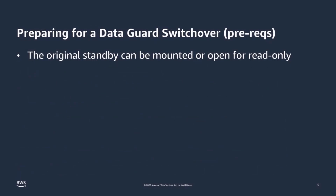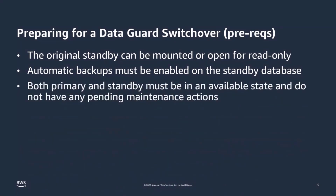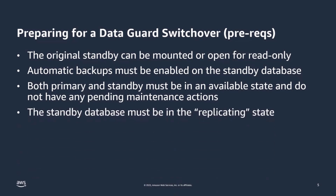As we prepare the environments for this switchover, there are a couple of things that need to be configured first. The original standby database can be either mounted — the traditional standby approach — or open for read-only, which is the Active Data Guard component. Another requirement is that automatic backups must be enabled on the standby database you're switching over to. Both the primary and the standby must be in an available state and must not have any pending maintenance activities — things like a patch waiting to be applied or some background process waiting to be completed. The standby database must also be in the replicating state. Because this is a zero data loss process, we enforce that and will not allow a failover to a standby that is not in sync with your primary.